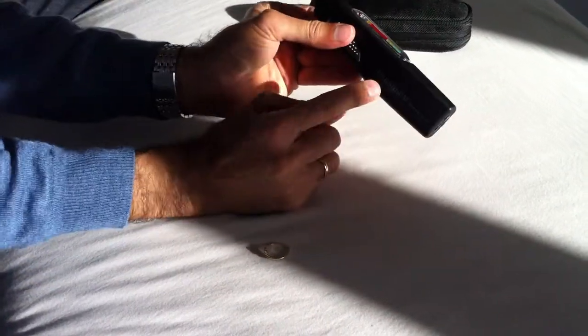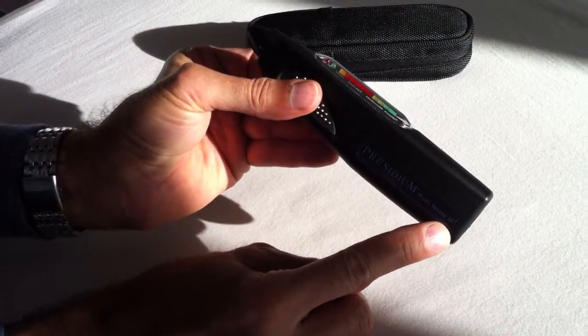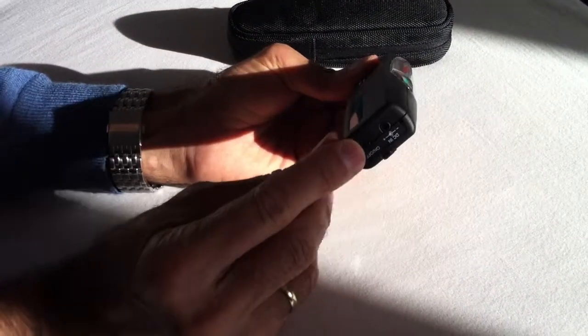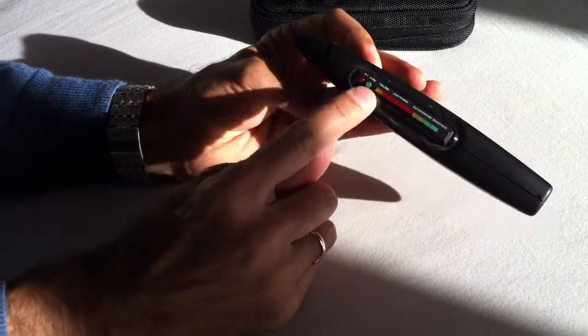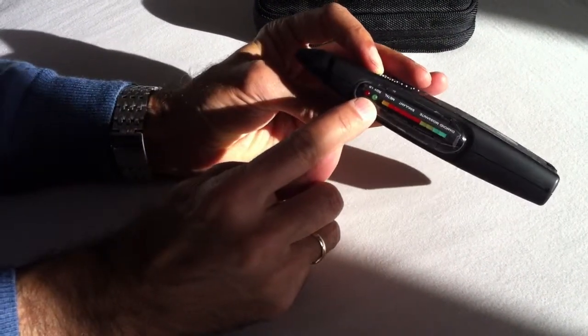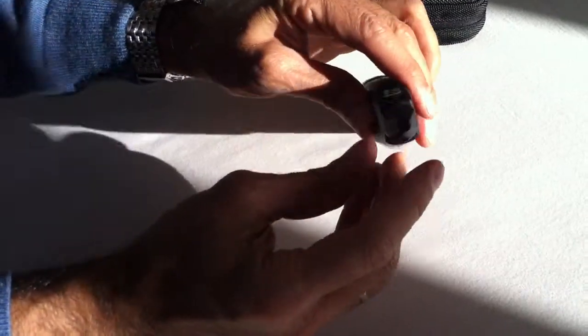You see this is the tester, Presidium Multitester 3. There is an on and off button here. Here is all the scale, here is a light lamp, and here is a cover.